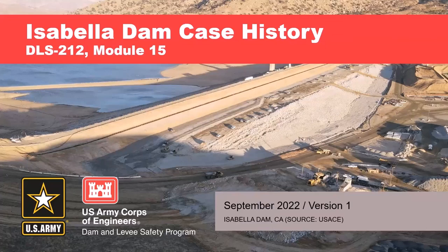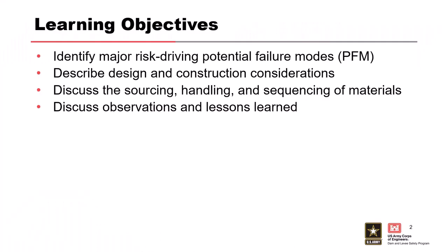This project, Isabella Dam, is one of the Corps' largest dam safety modification projects underway. With this case history, I'm going to identify the major risk-driving failure modes, discuss the design and construction considerations during the design phase, talk about sourcing, handling, and sequencing of materials to build the project, and then share observations and lessons learned during construction. Those are the key learning objectives.